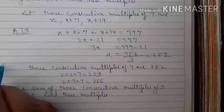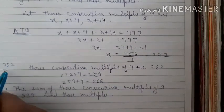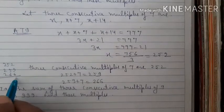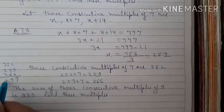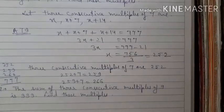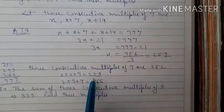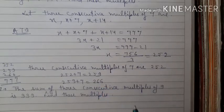We can verify: 252, 259 and 266 are all divisible by 7, confirming they are multiples of 7. So 252, 259 and 266 are the 3 consecutive multiples.